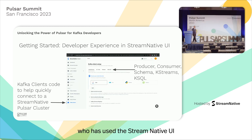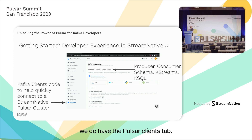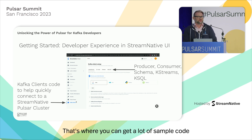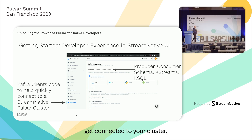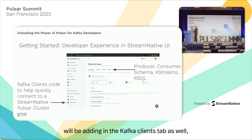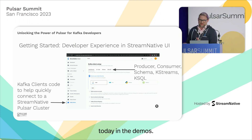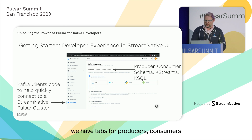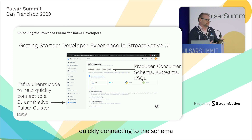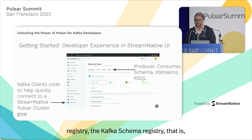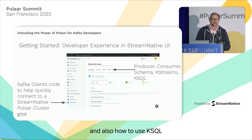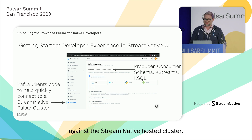For anyone who has used the Stream Native UI, you may have noticed in the lower left we have the Pulsar Clients tab, where you can get a lot of sample code to quickly get connected to your cluster with the Pulsar clients. We'll be adding the Kafka Clients tab as well, which has sample code to quickly connect to your cluster. Across the top you can see tabs for producers, consumers, quickly connecting to the Kafka schema registry, connecting with KStreams, and also how to use KSQL against the Stream Native hosted cluster.